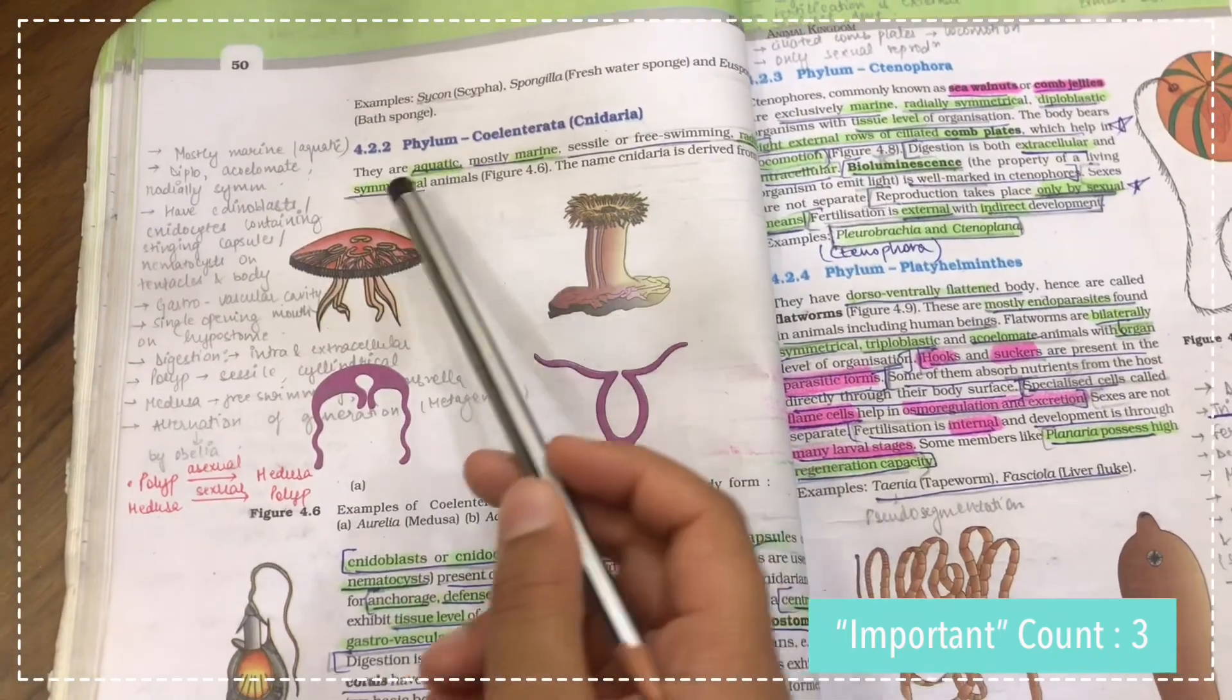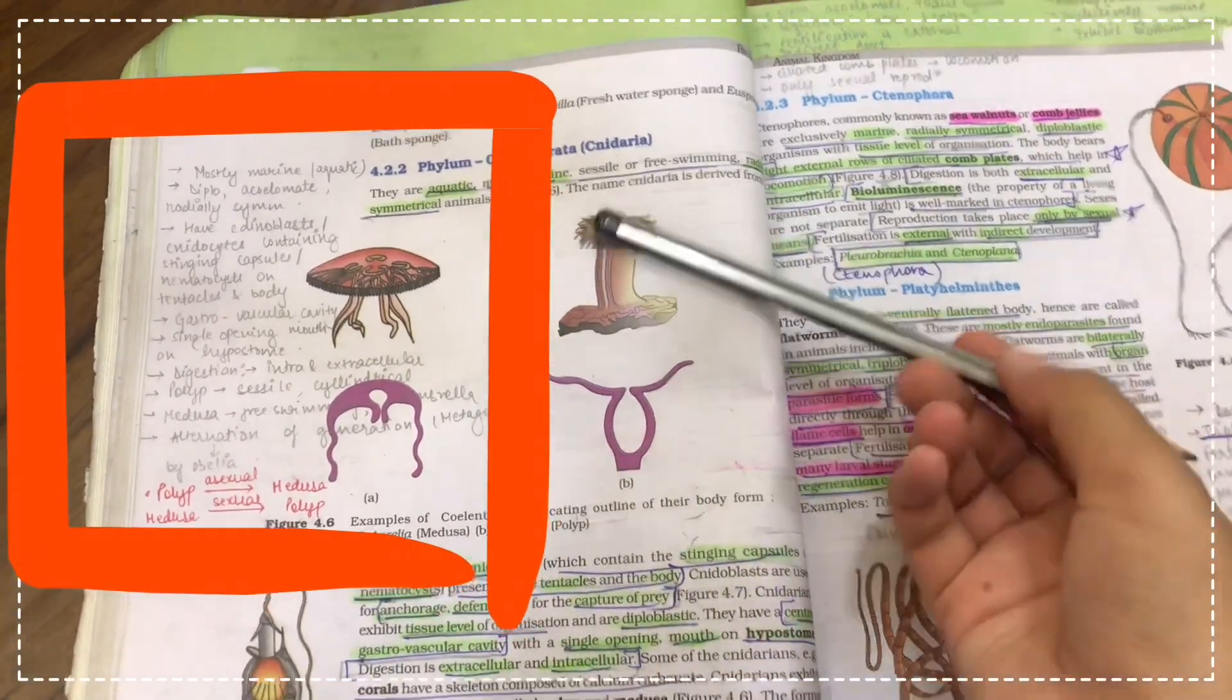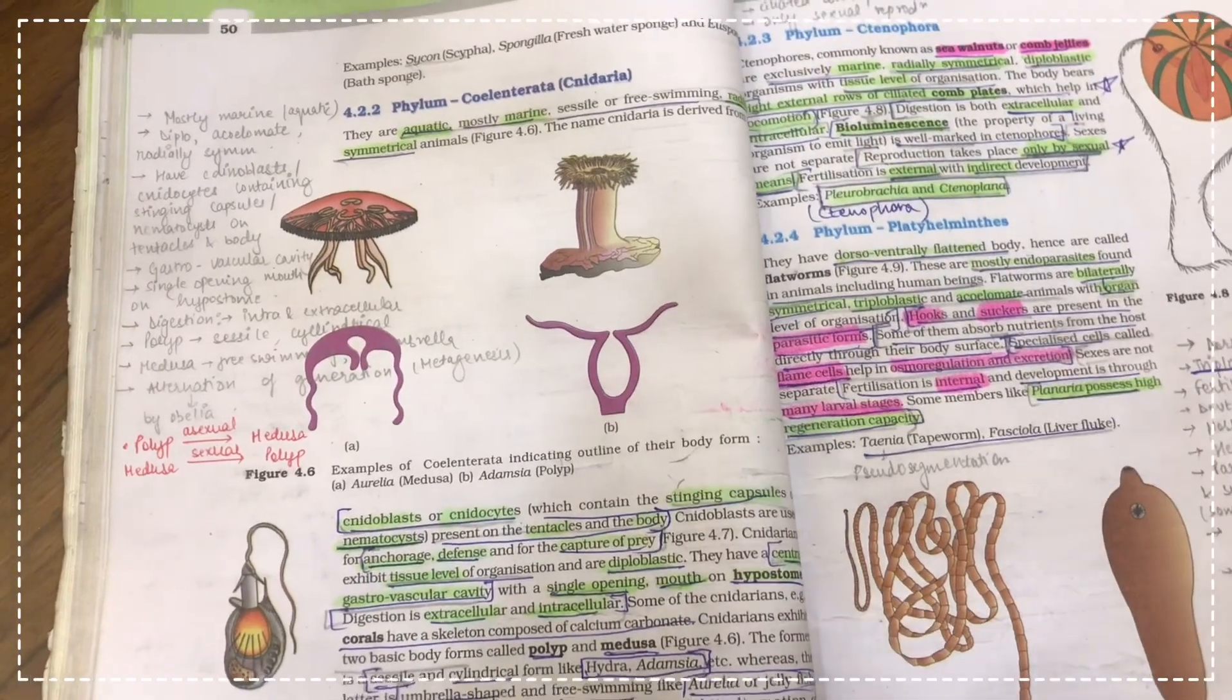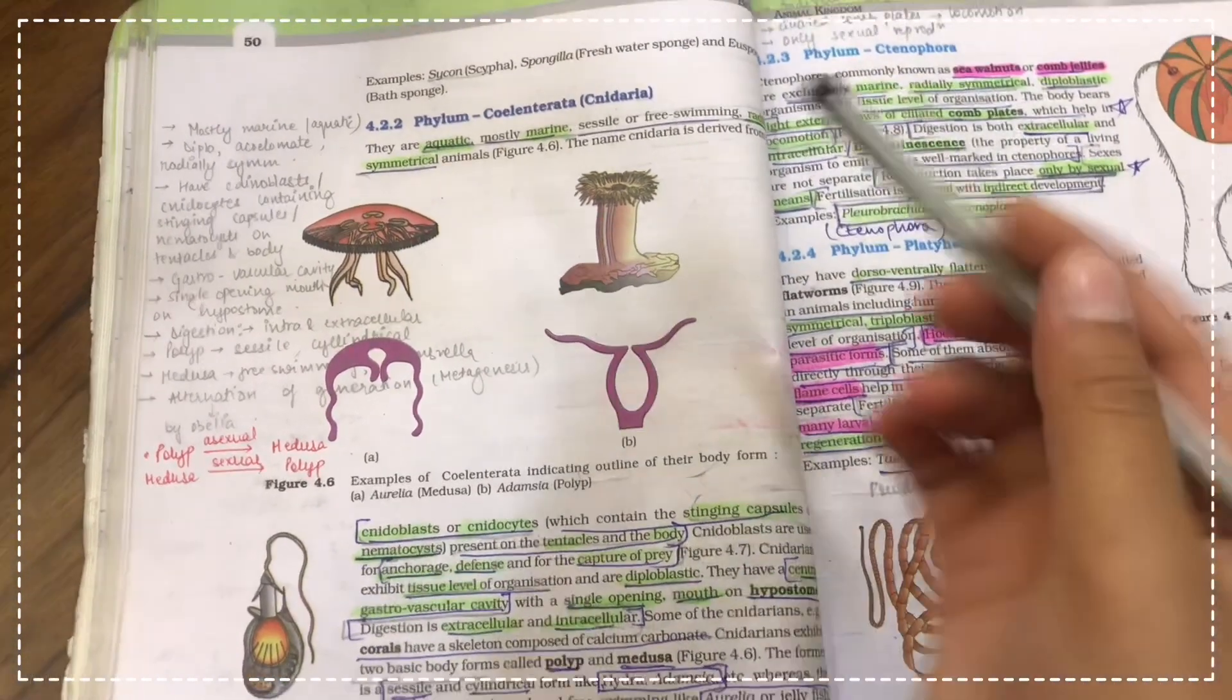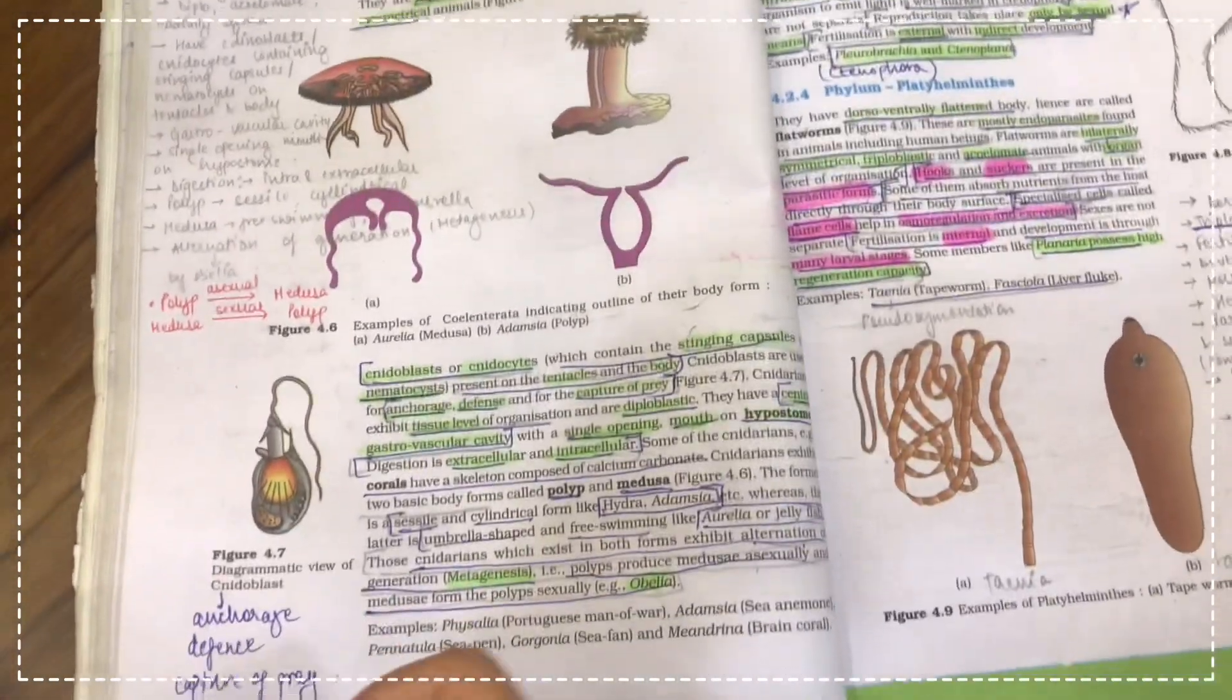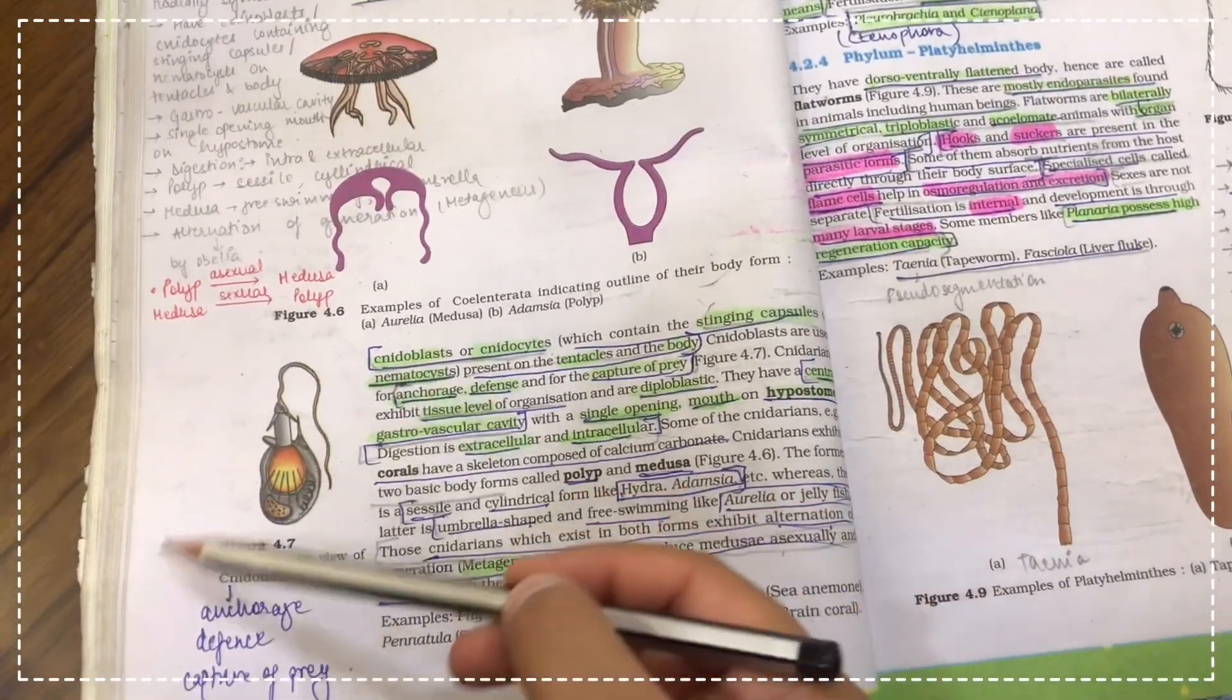And then I make pointers like everything that you read in this paragraph will be in the pointers above. So there is no need to read the entire paragraph again. We can just go through the pointers and our revision will be done.